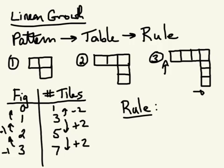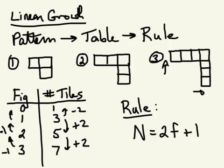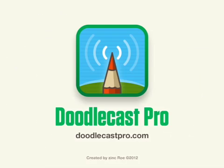The rule I'm going to come up with for this linear growth pattern is: the number of tiles N equals two times the figure number plus one. So if you tell me what figure you're looking at, I can always use my rule to tell you how many tiles you'll need. Made with Doodlecast Pro.